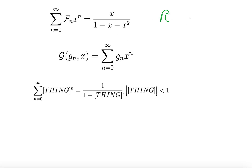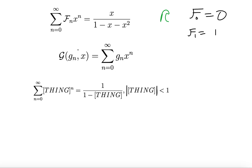The Fibonacci numbers start with f_0 equals 0, f_1 equals 1, and then each next term is the sum of the two previous. As a reminder for those who haven't seen the previous video, generating functions encode a sequence g_n in a variable x as a sum from n equals 0 to infinity of g_n x^n, like you see over here.